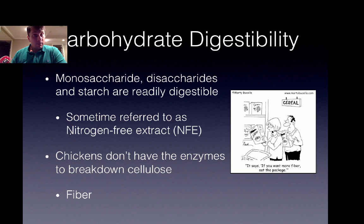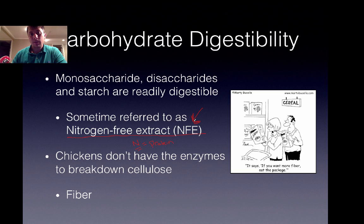Sometimes the starch content of a poultry diet can be referred to as nitrogen-free extract — nitrogen-free because you're not going to find the element nitrogen in any carbohydrate. Instead, nitrogen is really only going to be found in protein sources. So nitrogen-free extract is a way of expressing metabolizing energy as a result from carbohydrates, the cheaper carbohydrates.